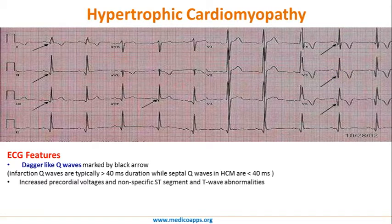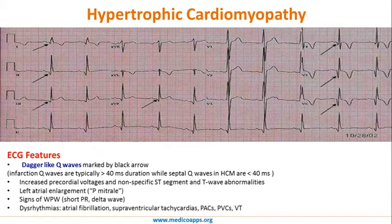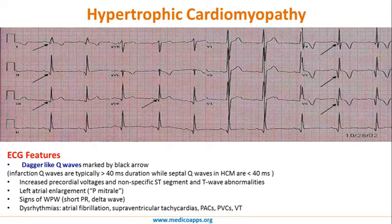The second feature is increased precordial voltages and non-specific ST changes. You can also see signs of left atrial enlargement and Wolff-Parkinson-White syndrome — these are the key additional findings.